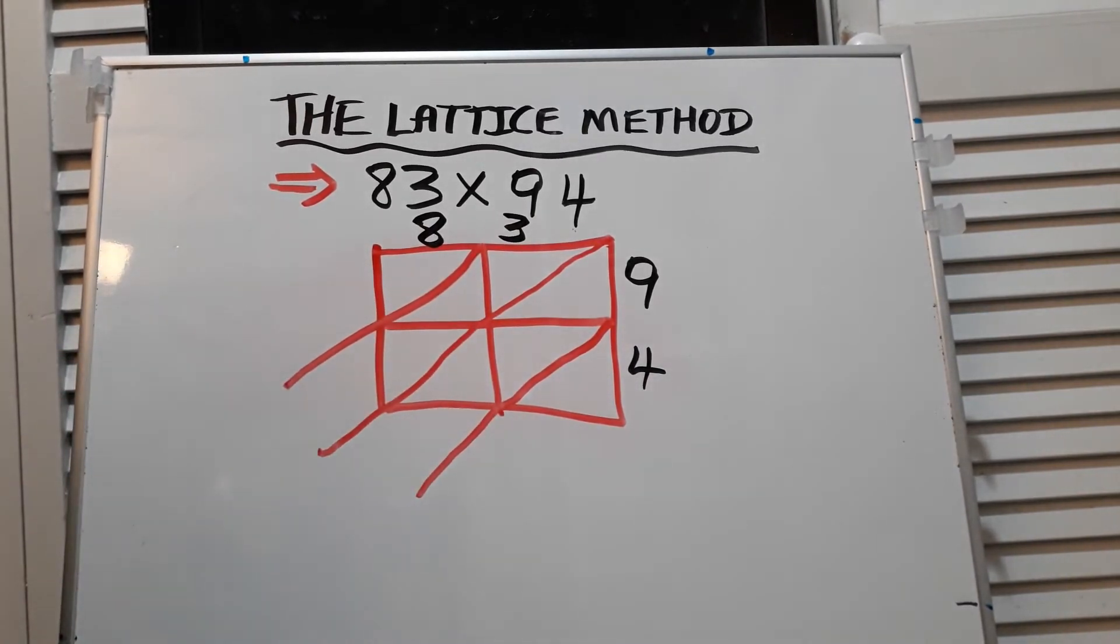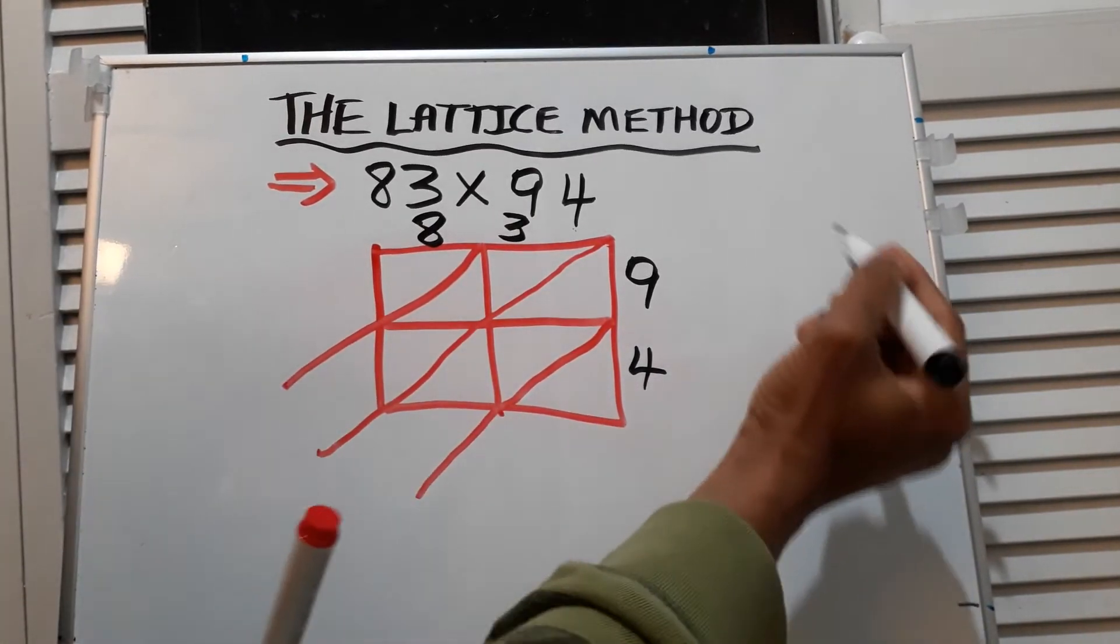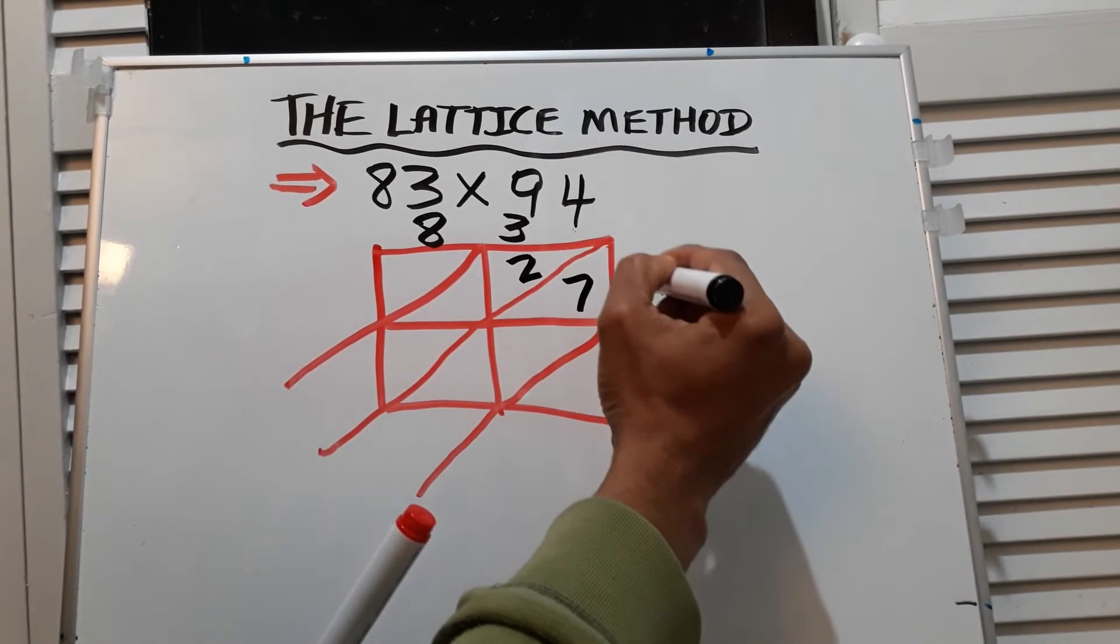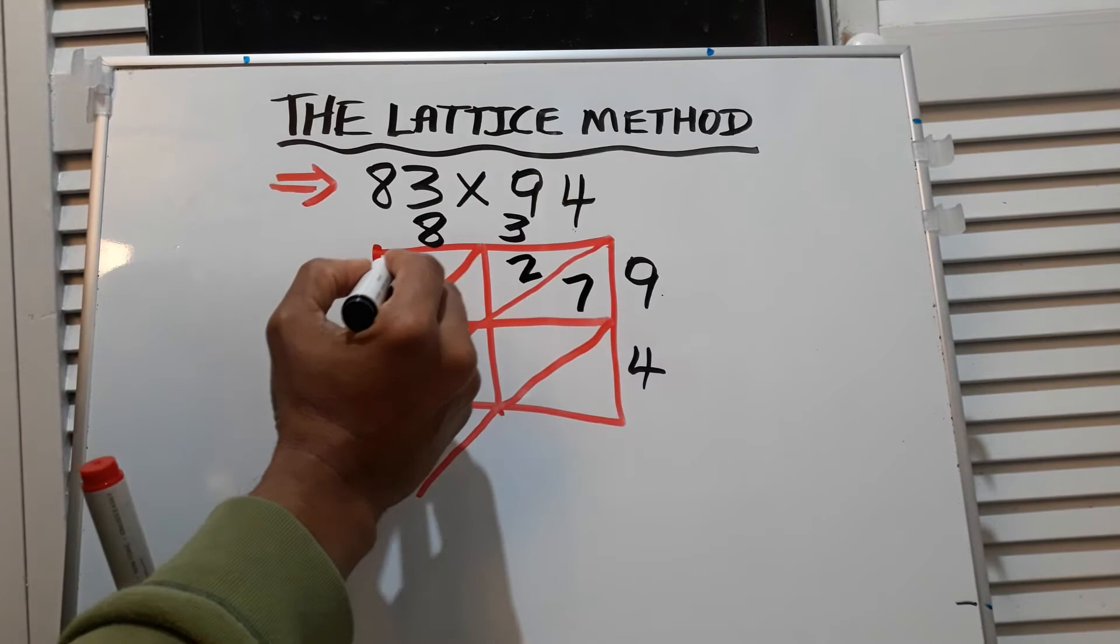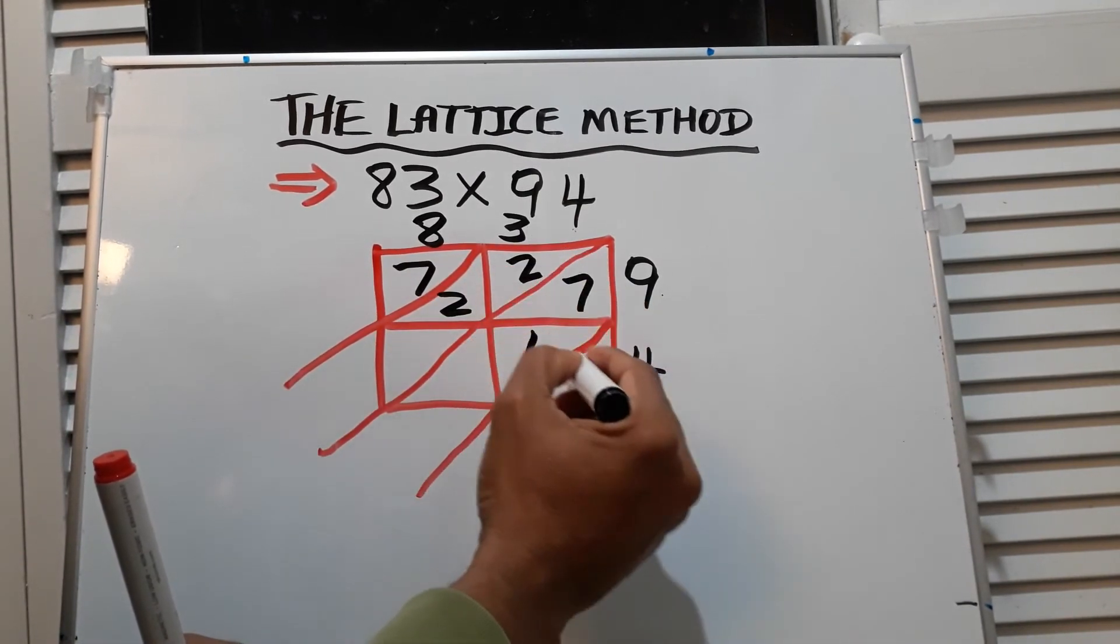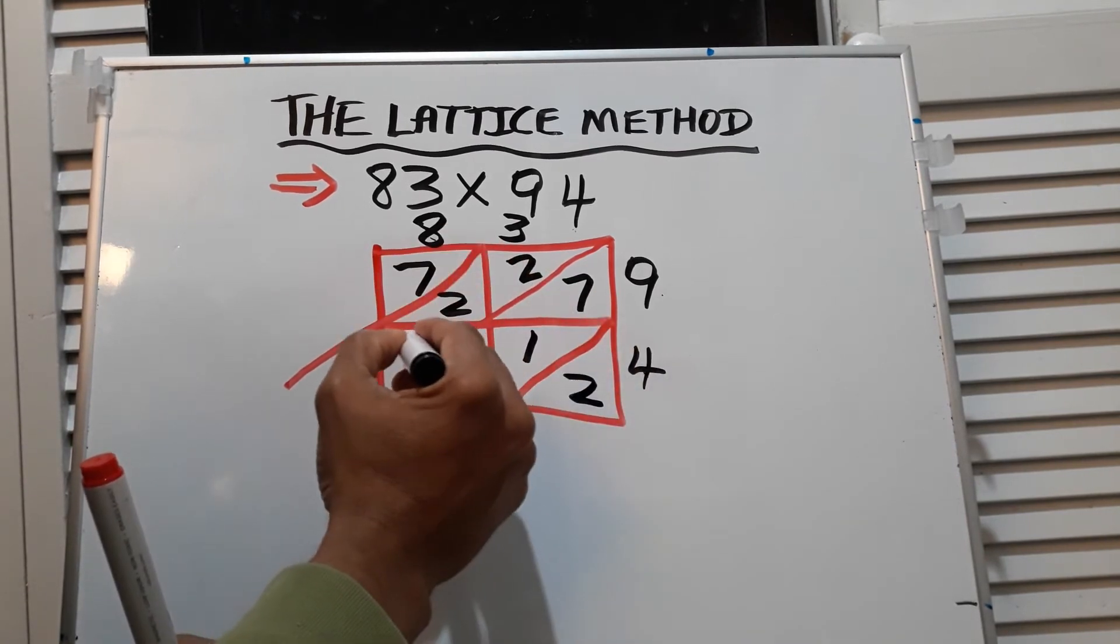The boxes. So now we multiply as usual: 9 times 3 is 27, 9 times 8 is 72, 4 times 3 is 12, 4 times 8 is 32.